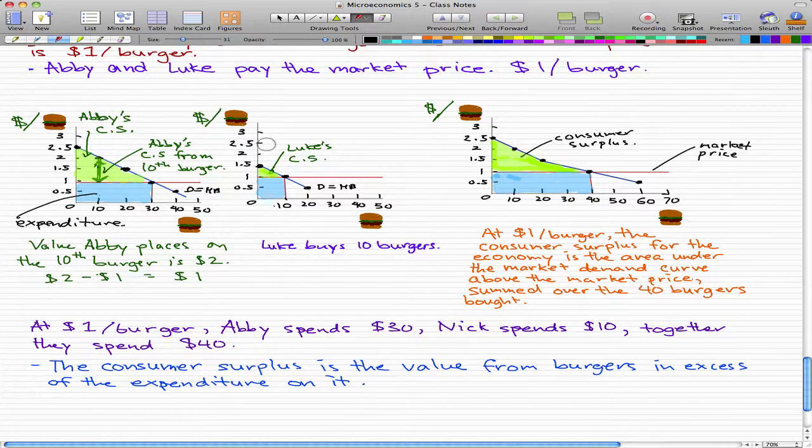I just went ahead and filled everything in because everything's pretty much easy from the last video. So talking about Luke, we know that for Luke's consumer surplus, it's just this green highlighted part below his individual demand curve and above the market price, which is the red line.